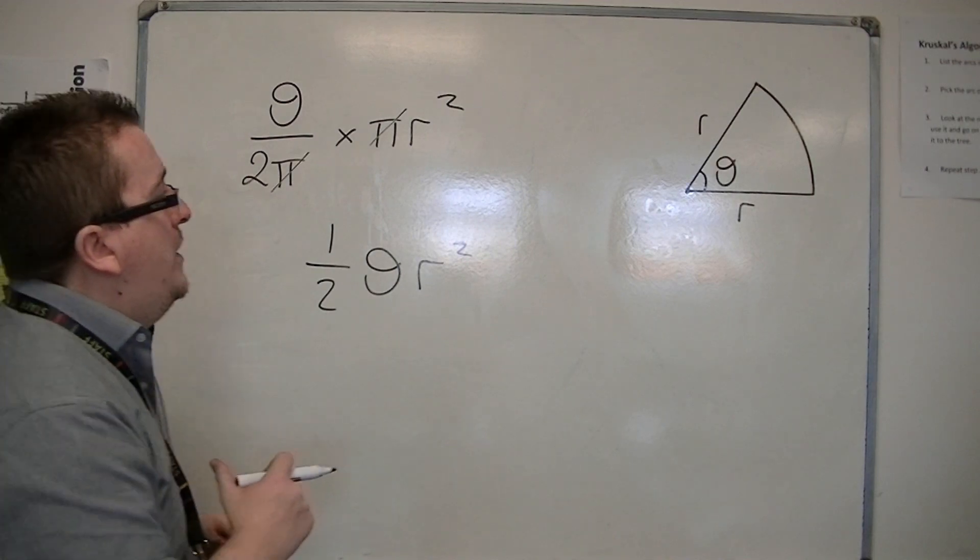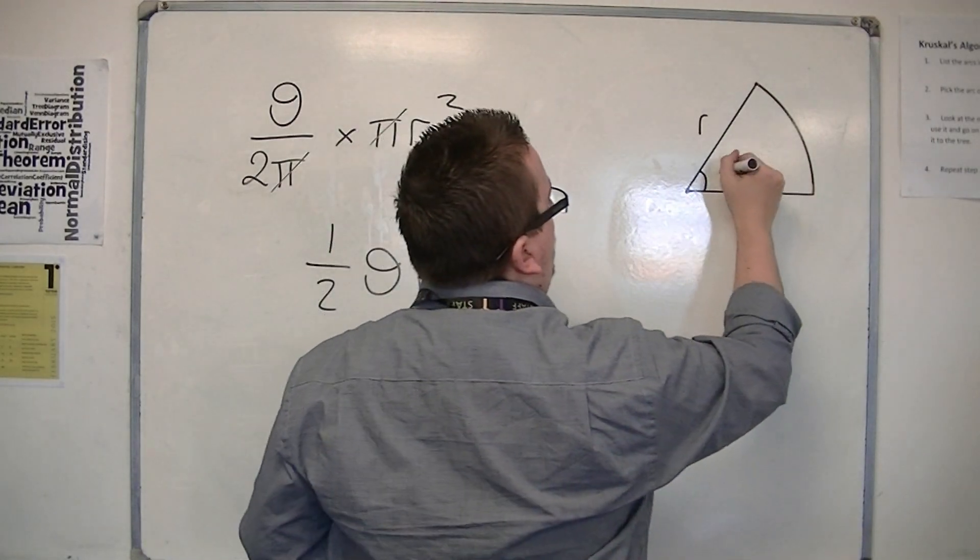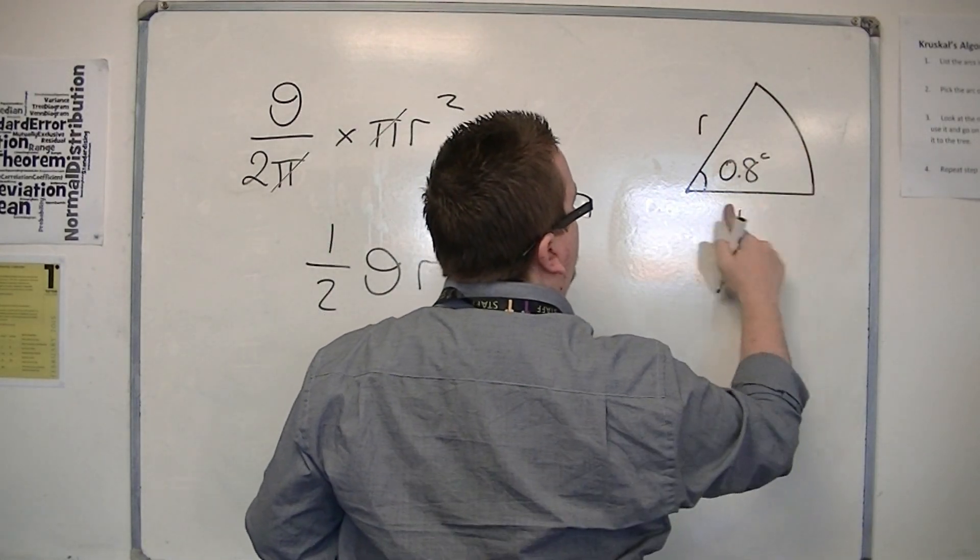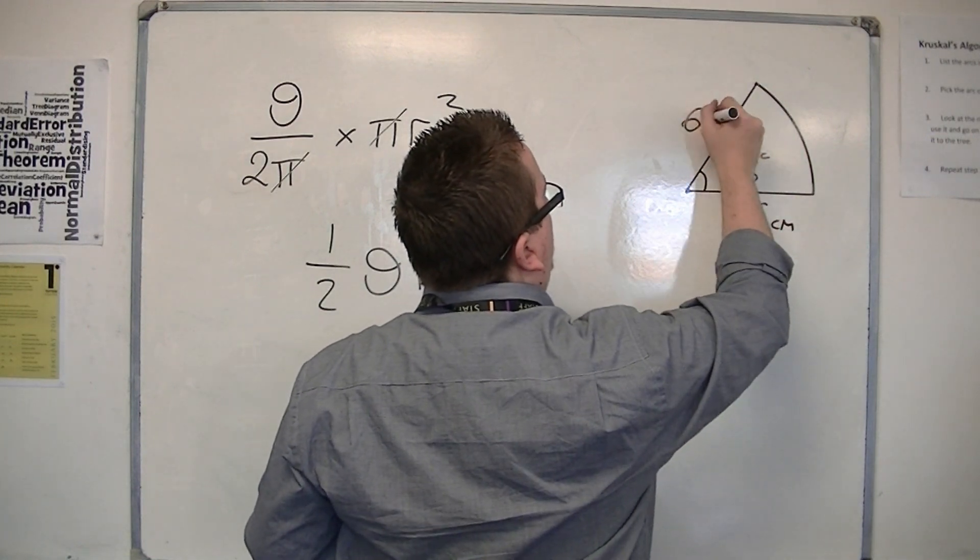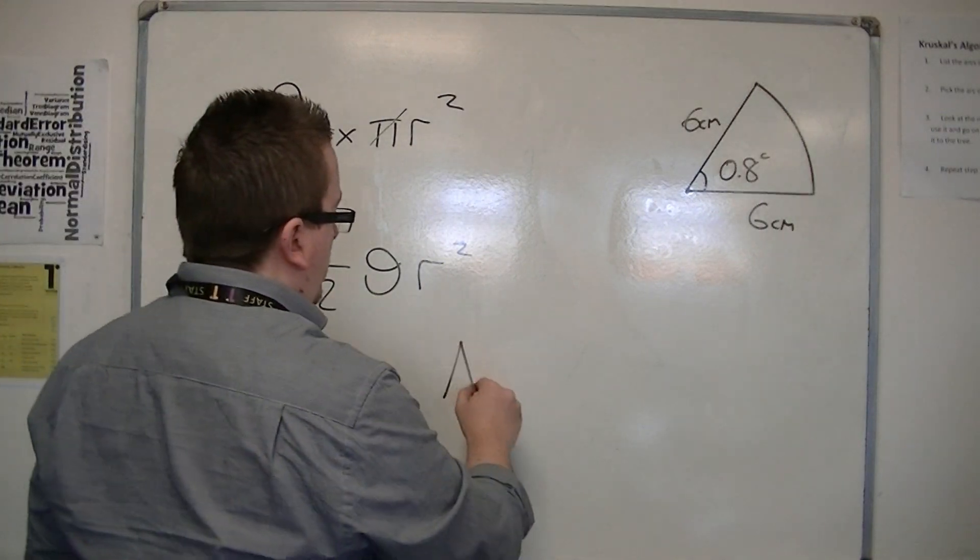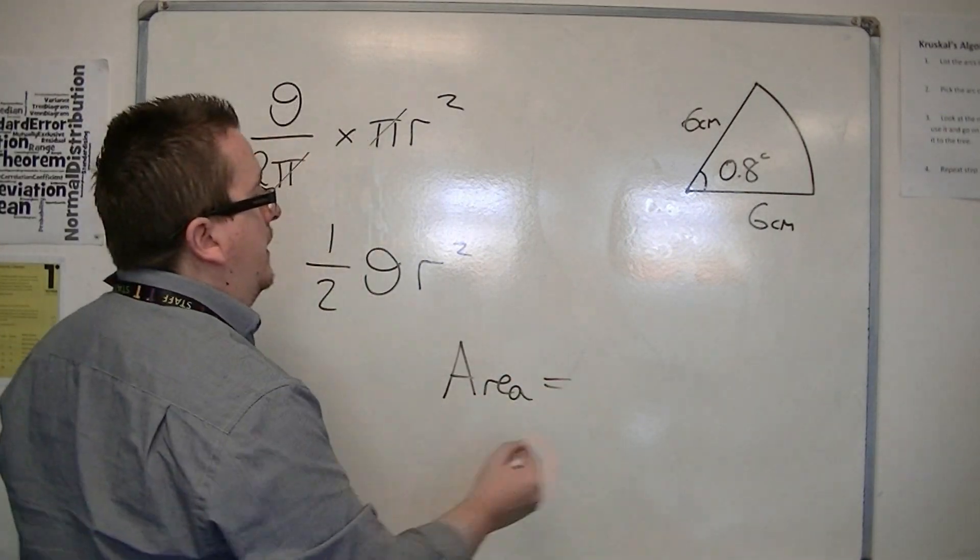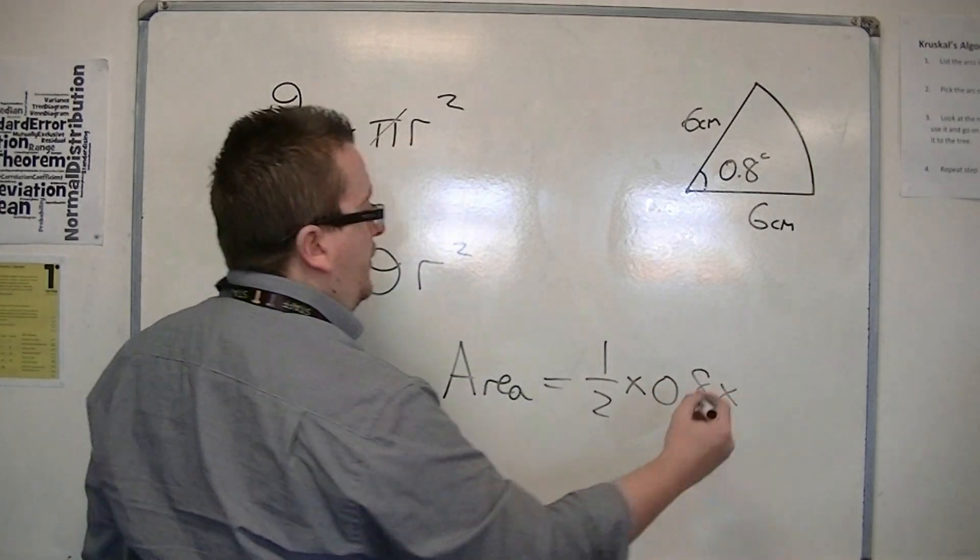So, if you know that that angle is 0.8 radians, and this is 6 centimeters, and that's 6 centimeters, then the area of that sector is one-half times 0.8 times 6 squared.